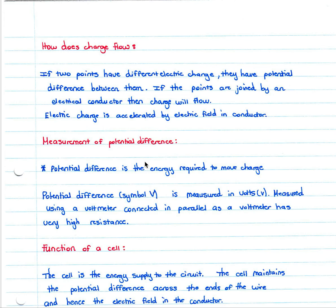Potential difference is the energy required to move charge. It has the symbol V and is measured in volts. We use a voltmeter connected in parallel as a voltmeter has very high resistance, so we connect it in parallel to read potential difference but not affect our circuit.